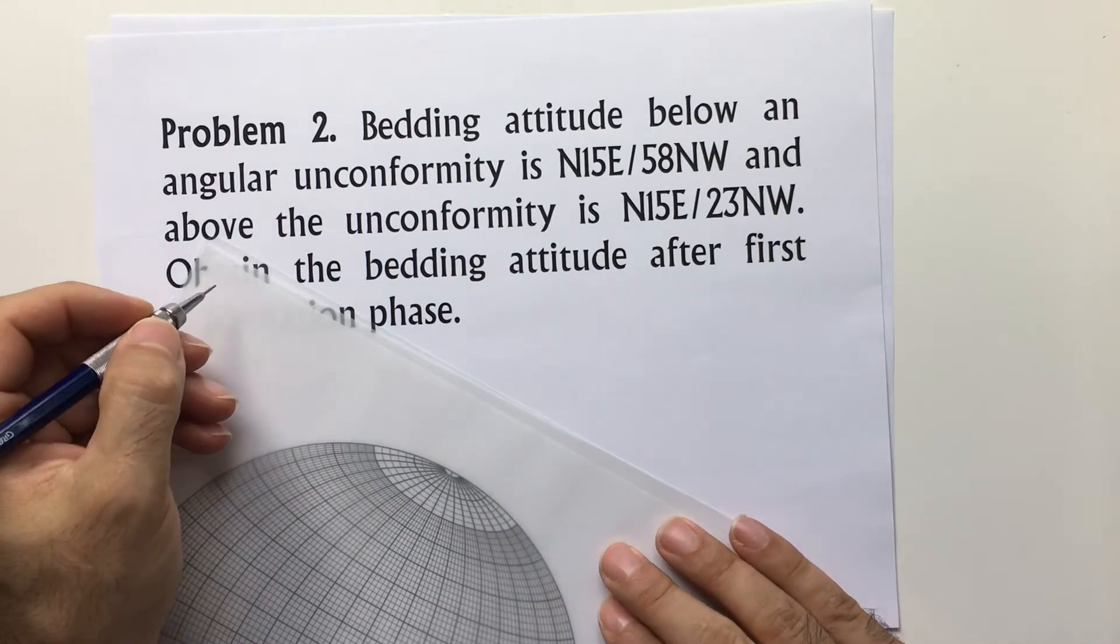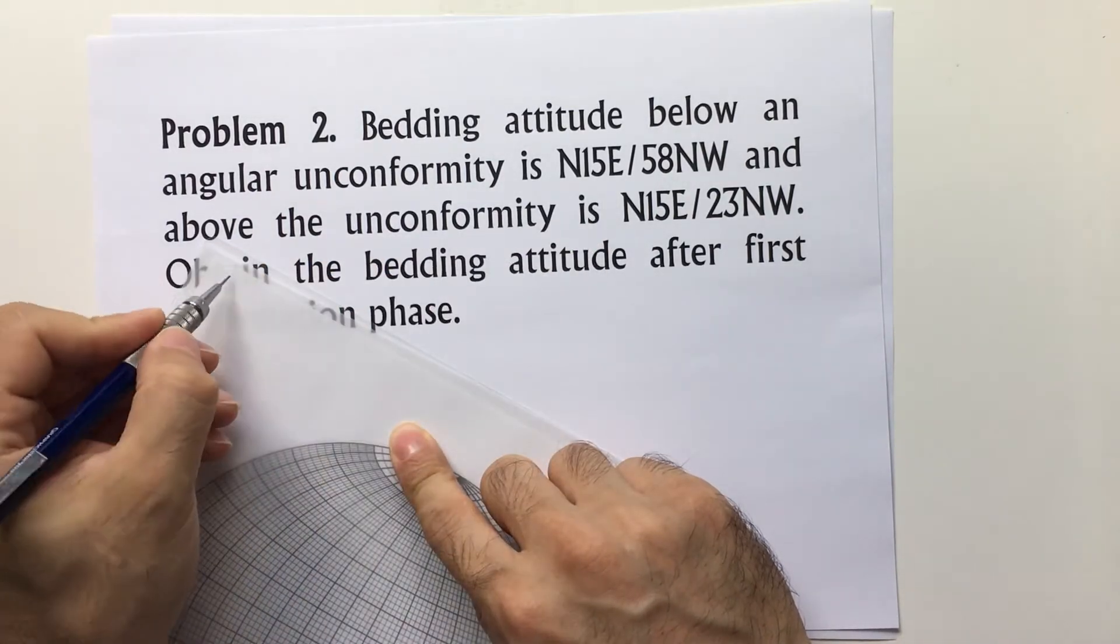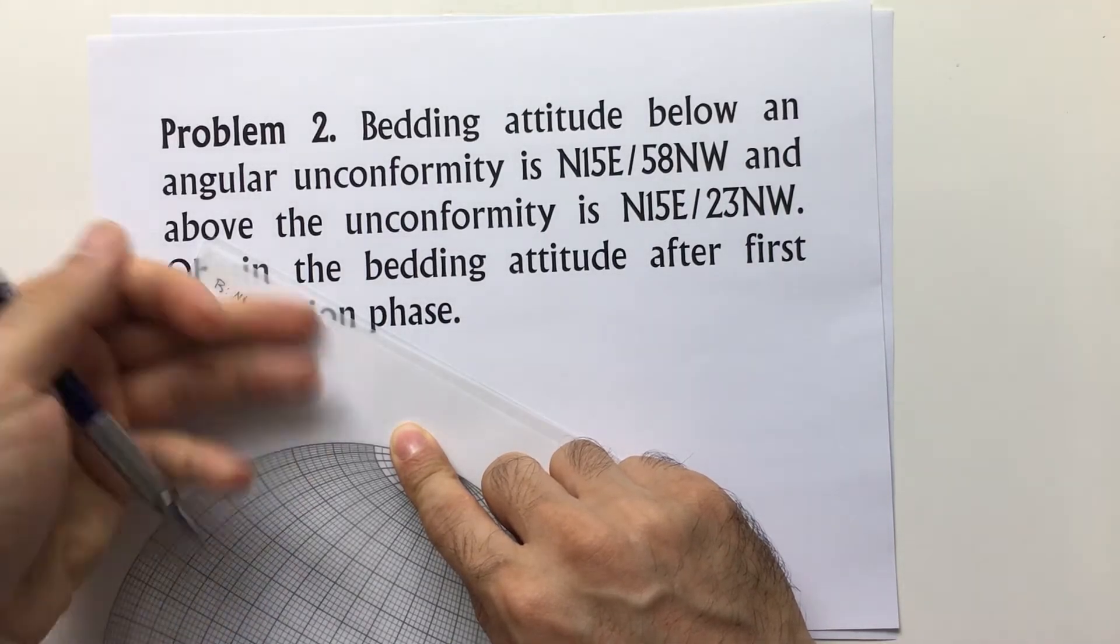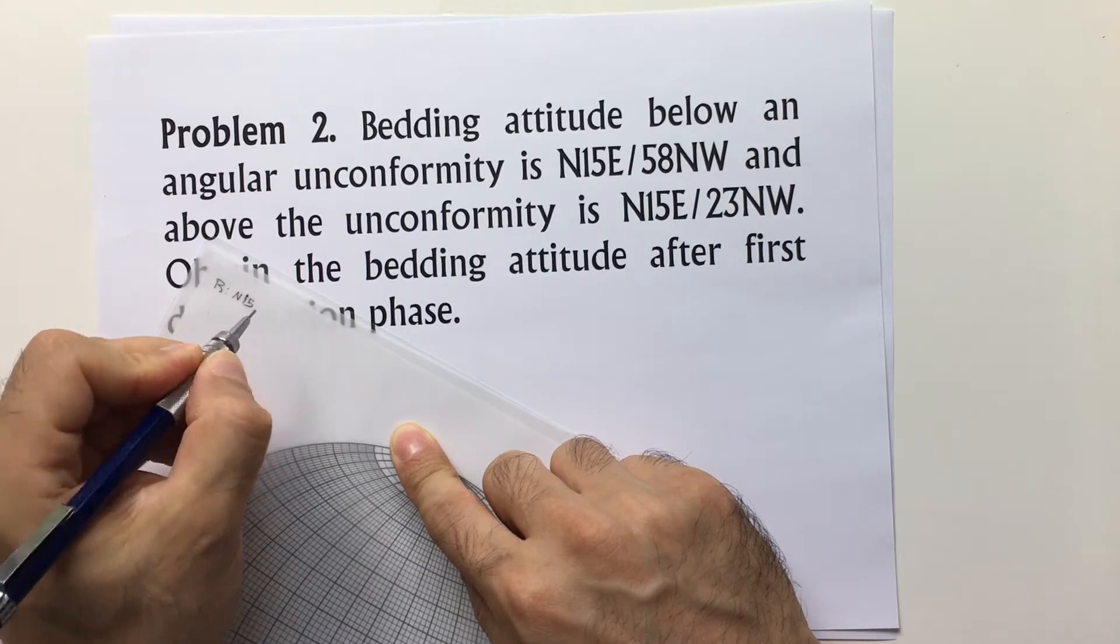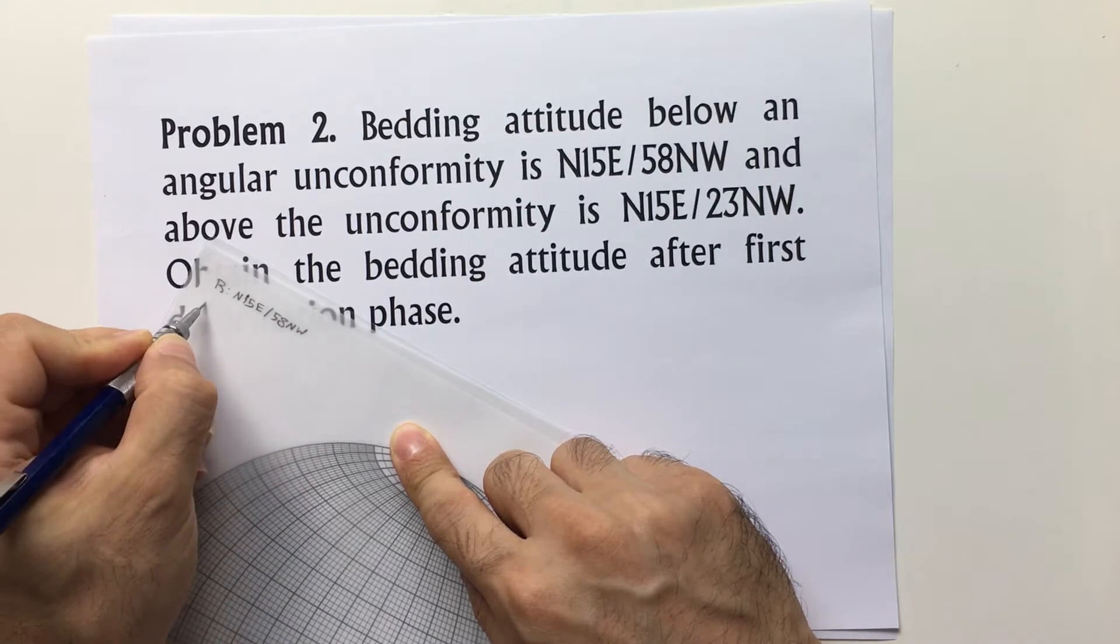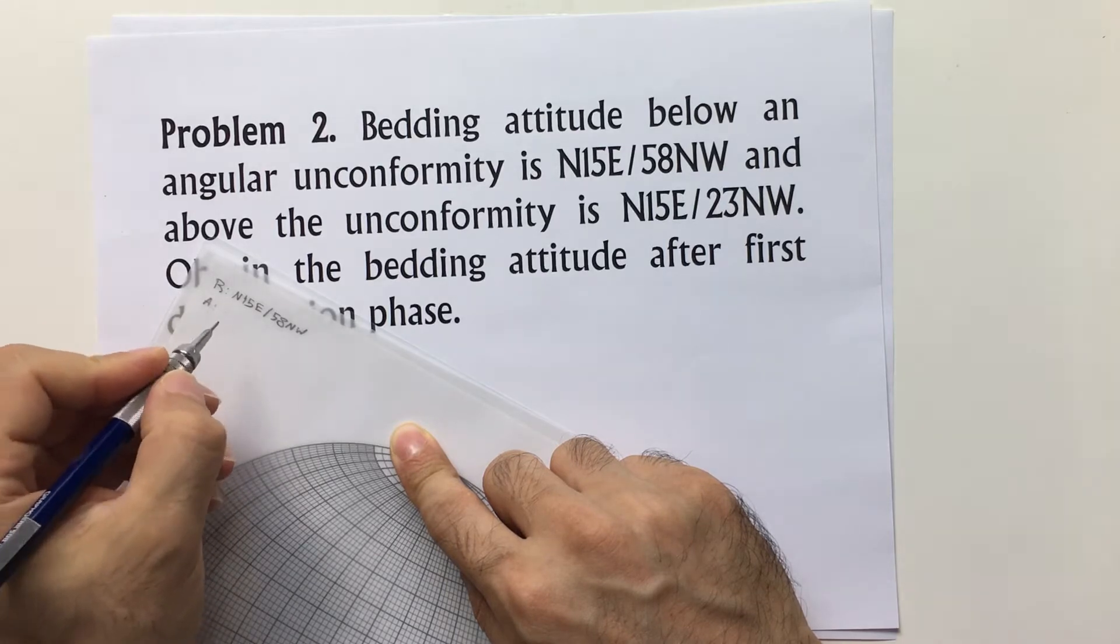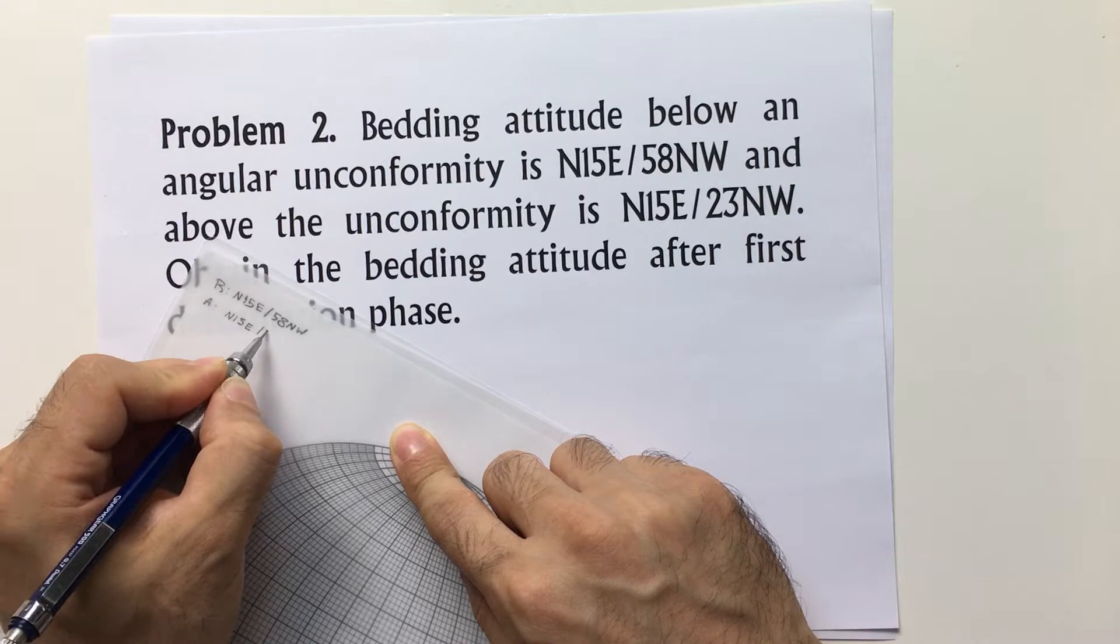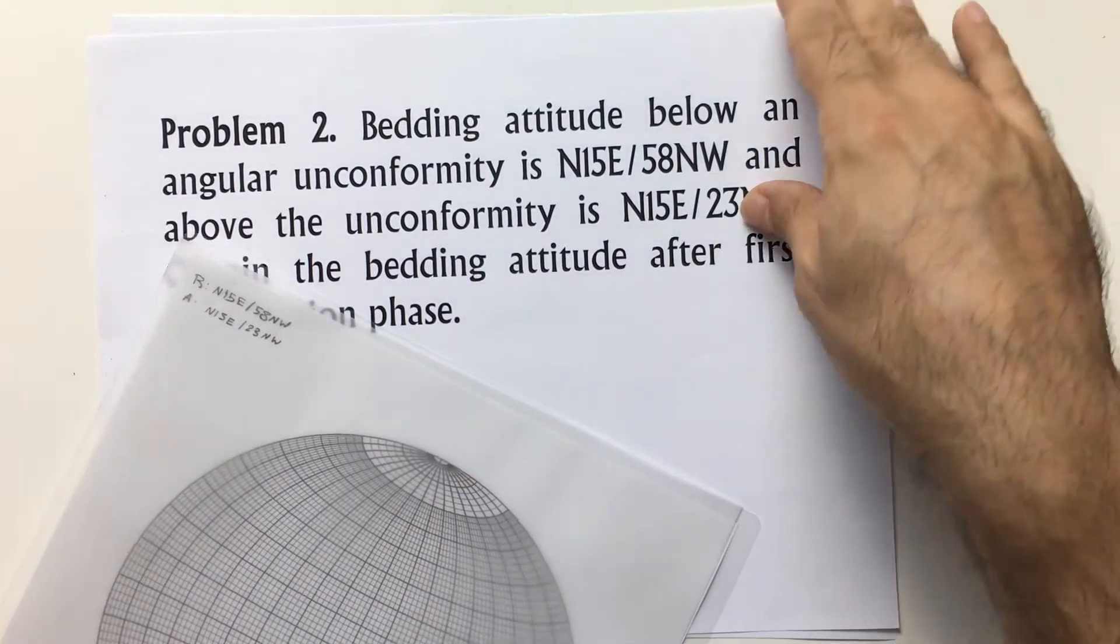Here I have my stereonet. I will make some notes for myself. Below the unconformity, the bedding is N15E/58NW. Above the unconformity, which I'm showing with 'A', is N15E/23NW.